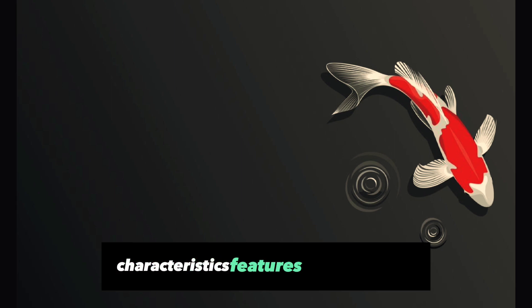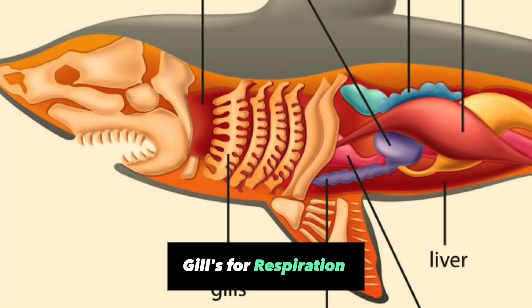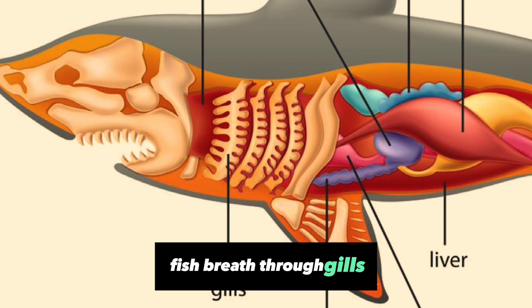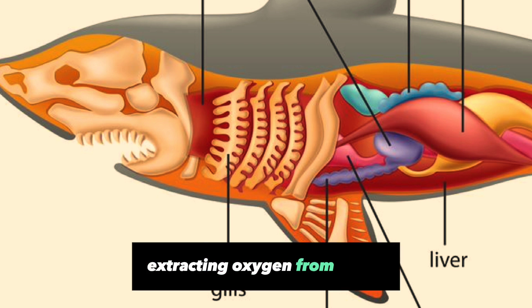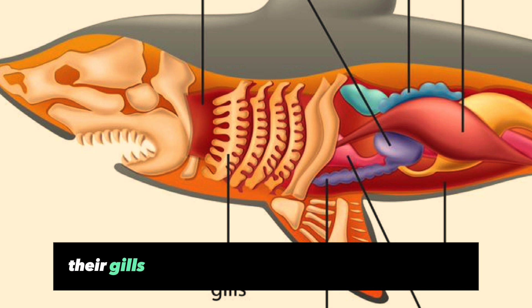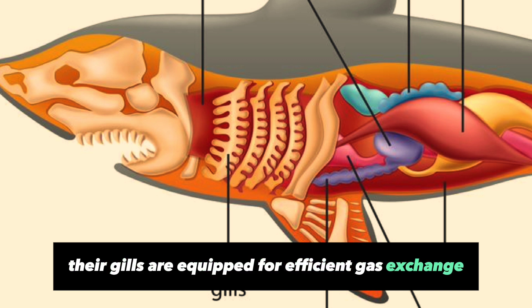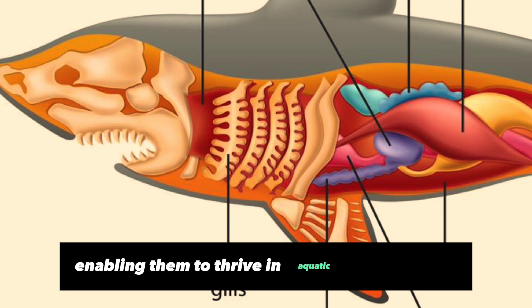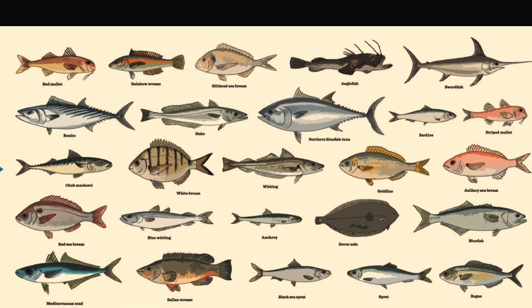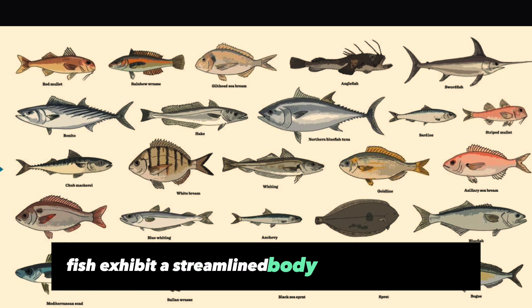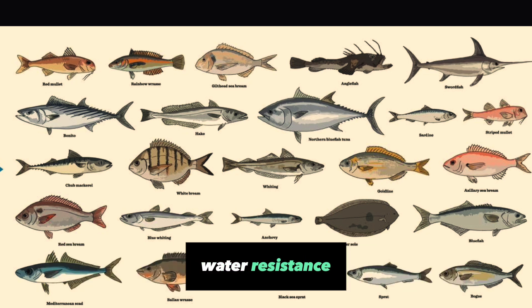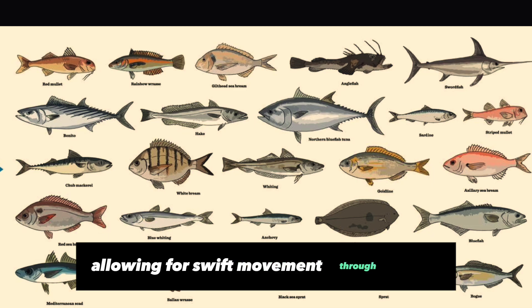Characteristics and features of fish: Gills for Respiration — fish breathe through gills, extracting oxygen from water. Their gills are equipped for efficient gas exchange, enabling them to thrive in aquatic environments. Streamlined Body — fish exhibit a streamlined body shape that reduces water resistance, allowing for swift movement through water.